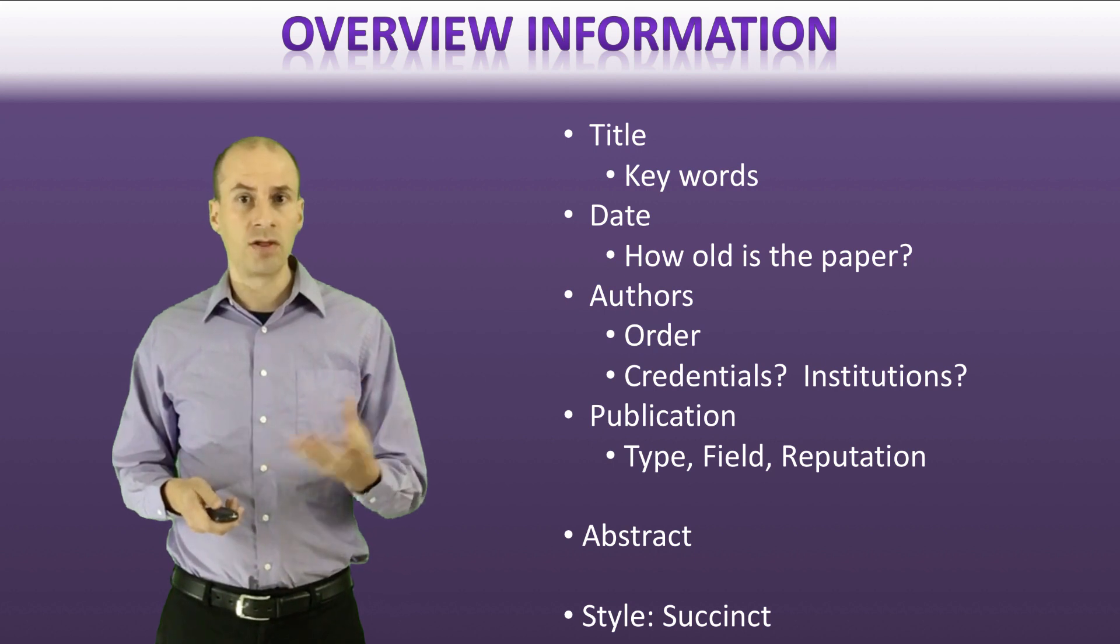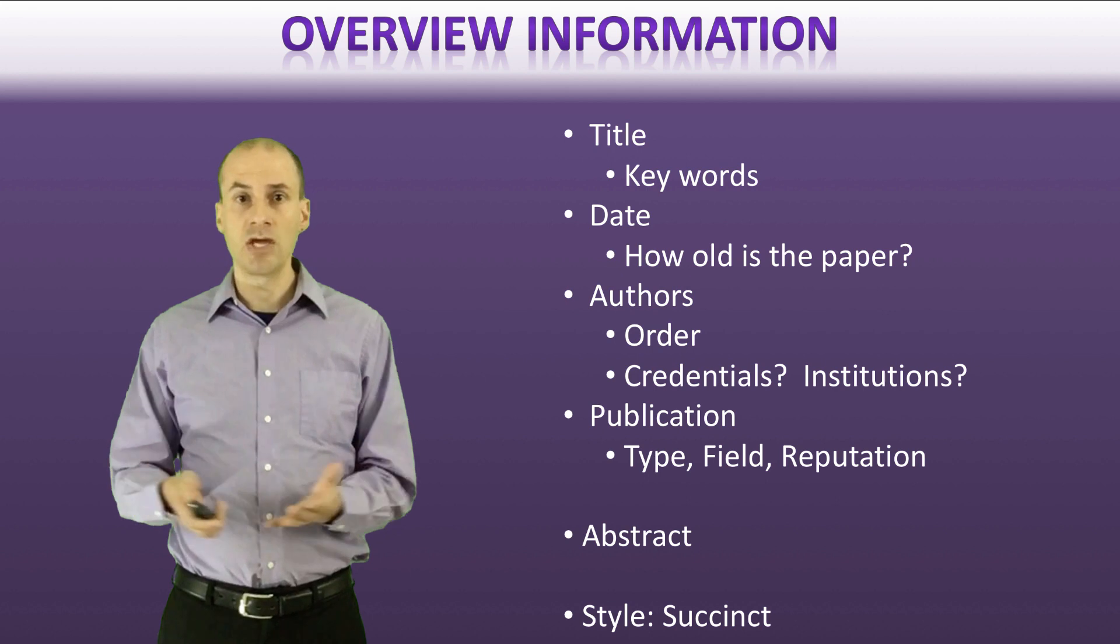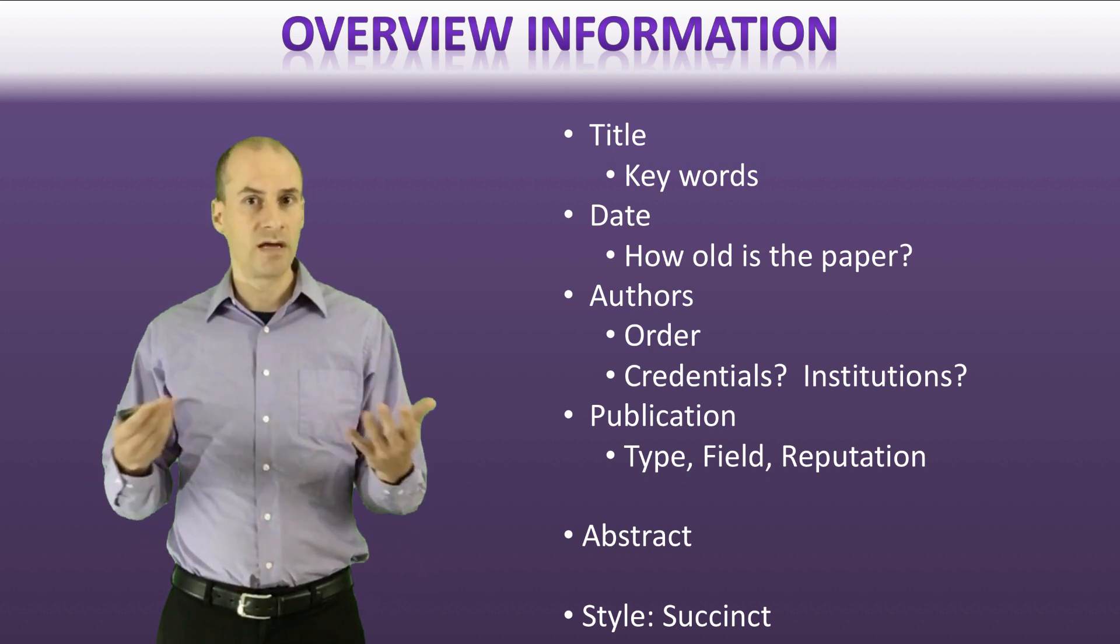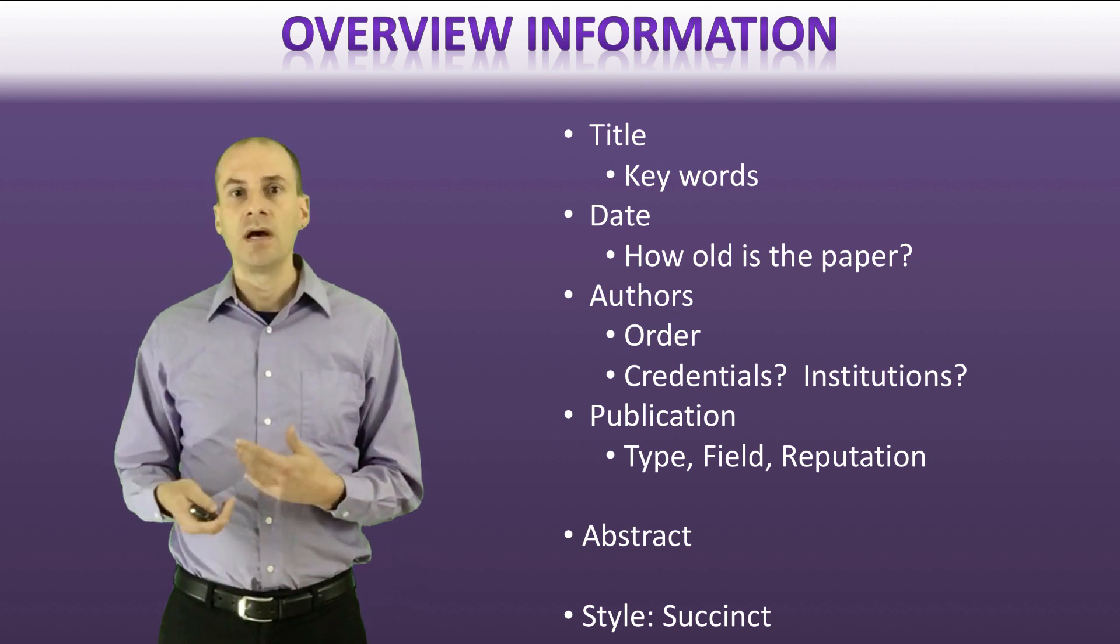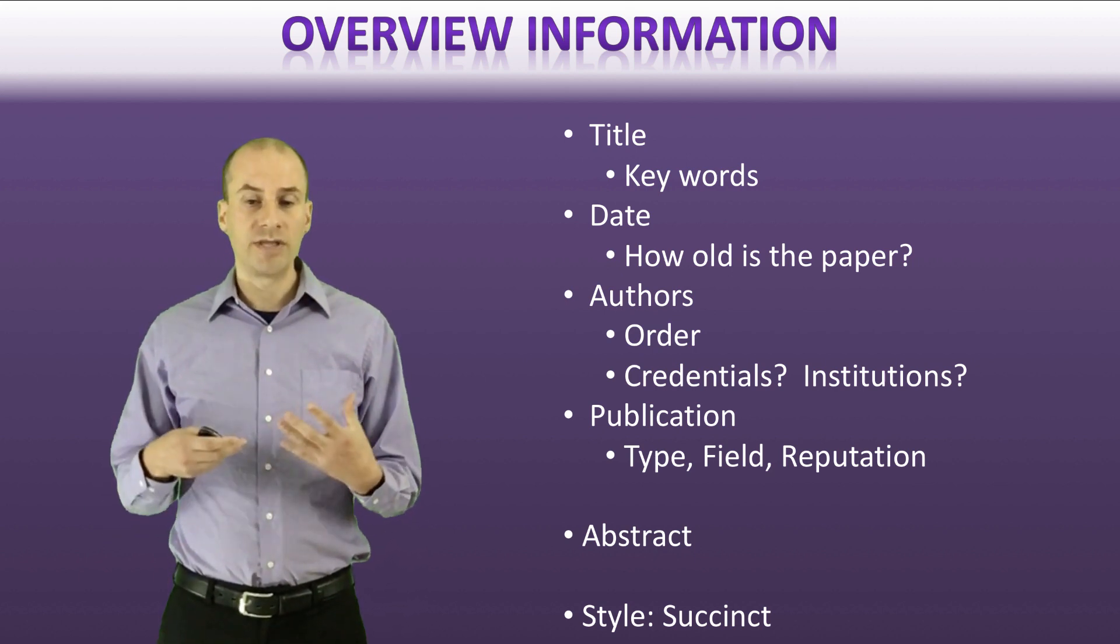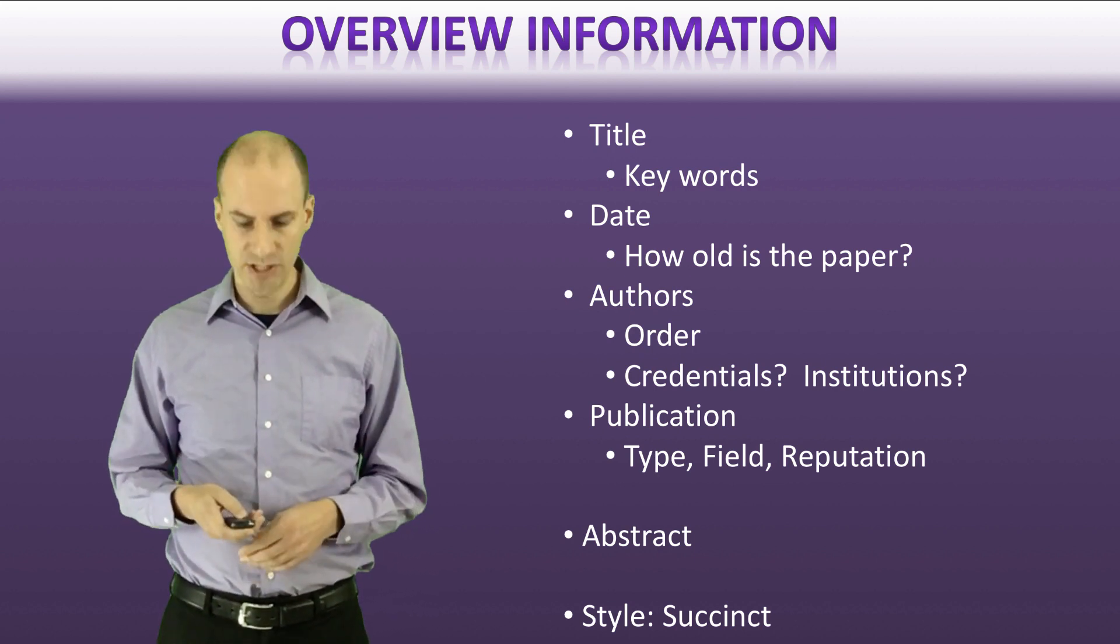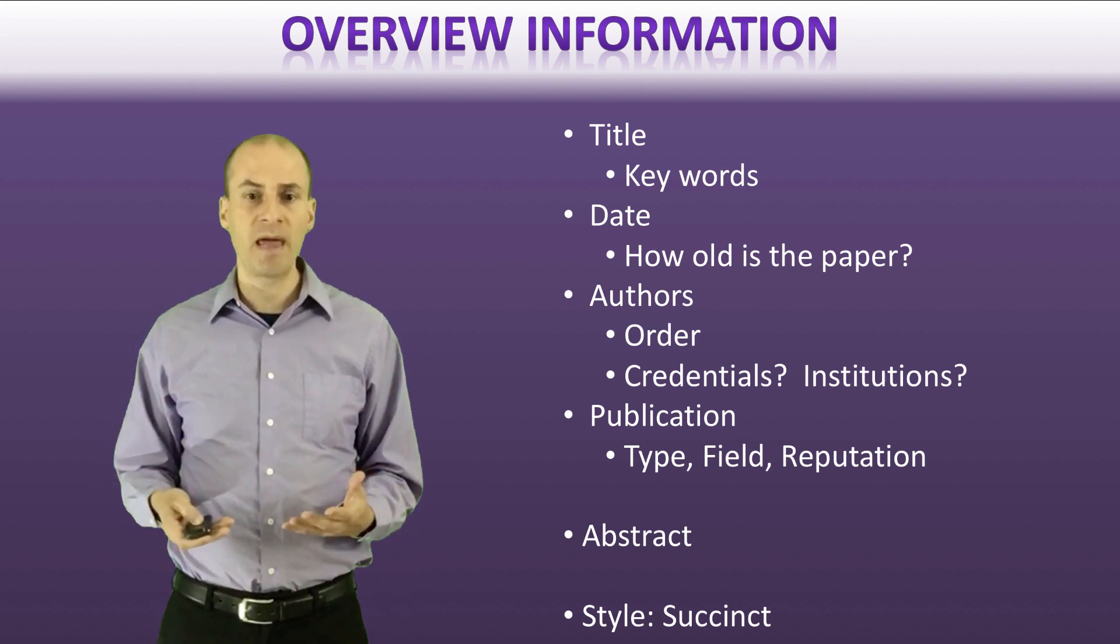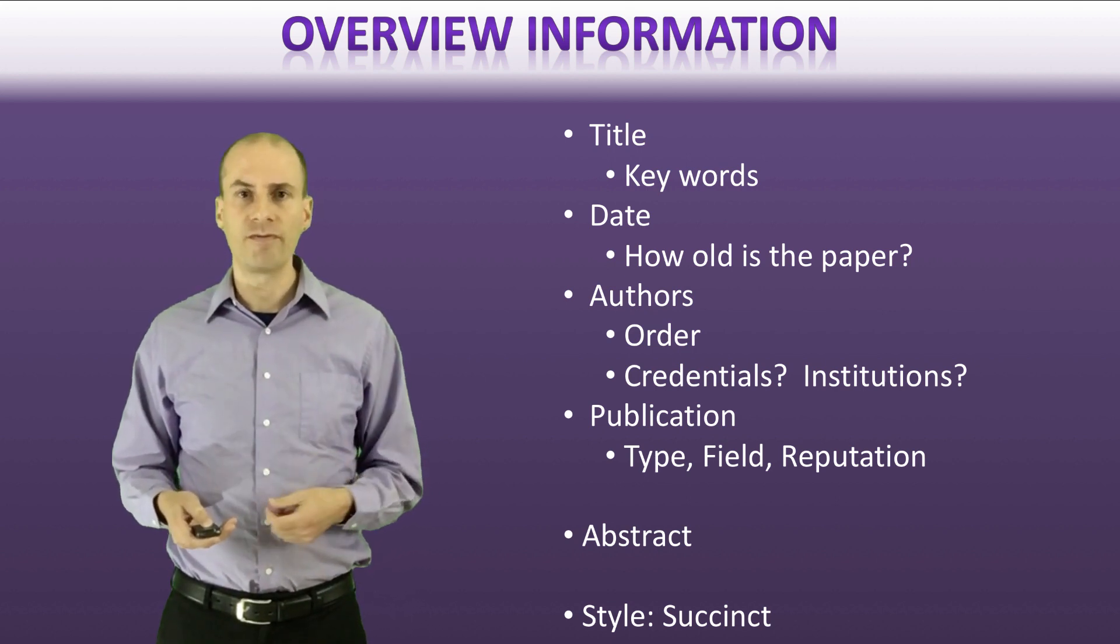So that's some general information that you get just from looking at that first page of a paper. You'd also look at the abstract as well. So the abstract is essentially where the author has put together a brief statement of what the background is, how the study was conducted, what the results were, and what the general conclusions were from that paper. So that's a very helpful source for you to get initial information about what that paper is doing relatively fast. Generally the style of this first page of a paper is generally quite succinct for that general background overview information.